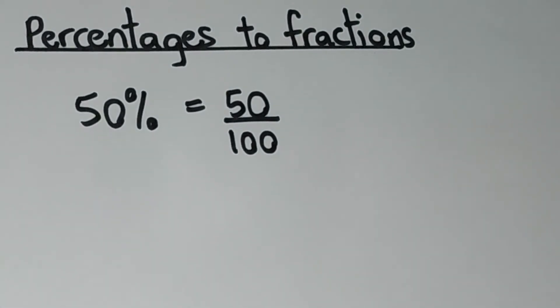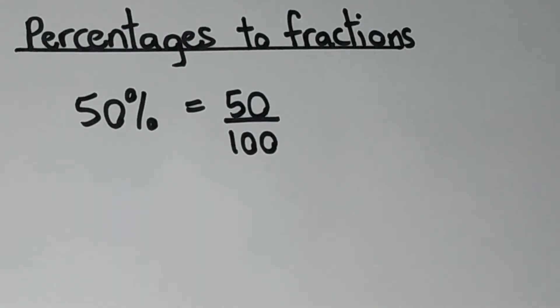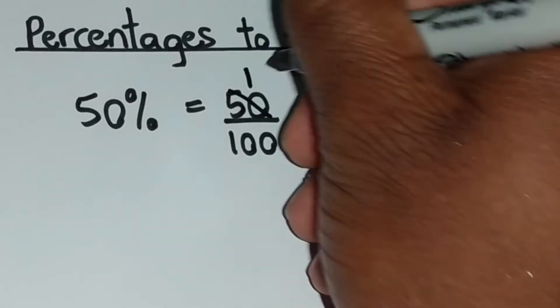So what we can do now is to reduce this even further. So 50% can also be written as a fraction in the form one over two.